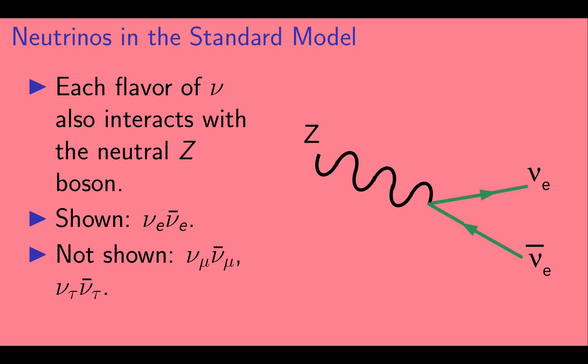Additionally, each flavor of neutrino also interacts with the electrically neutral Z boson. Here we show a diagram that represents a Z decaying to an electron neutrino and electron antineutrino. It can also decay into a muon neutrino and muon antineutrino, or a tau neutrino and tau antineutrino.